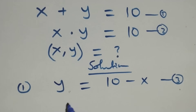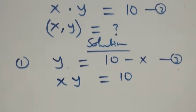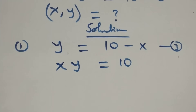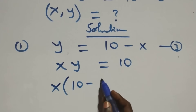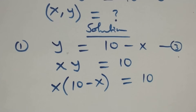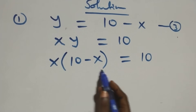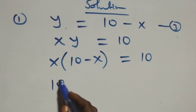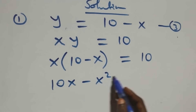And also from equation two, we have x times y equals to ten. Then we substitute equation three here, so we have x times (ten minus x) which equals to ten. x opens this bracket and this becomes ten x minus x squared equals to ten.